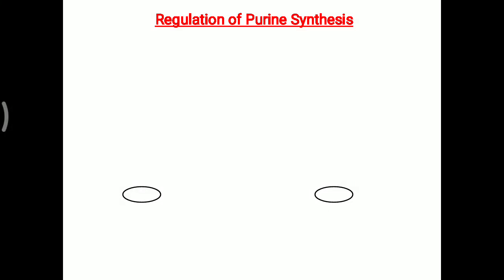Today's topic is about regulation of purine synthesis. The first step for purine - adenine and guanine formation - is ribose 5-phosphate plus ATP, which will make PRPP with the help of synthetase enzyme.